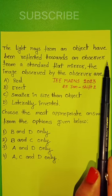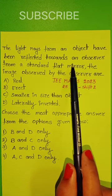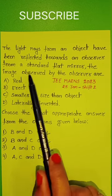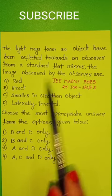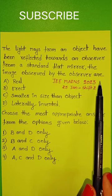The light rays from an object have been reflected towards an observer from a standard flat mirror. The image is observed by the observer.